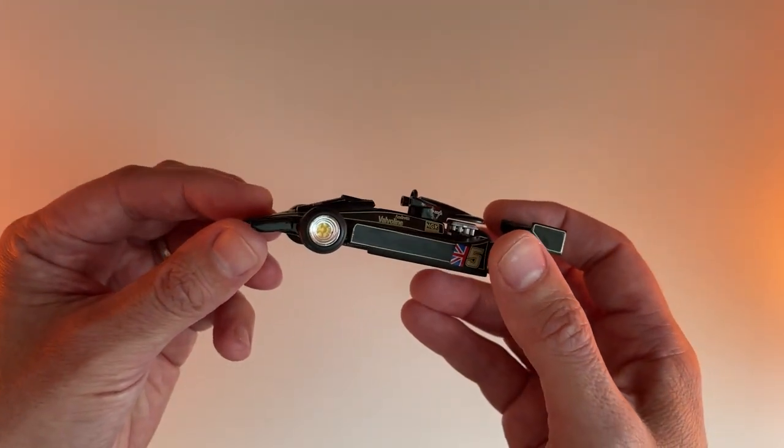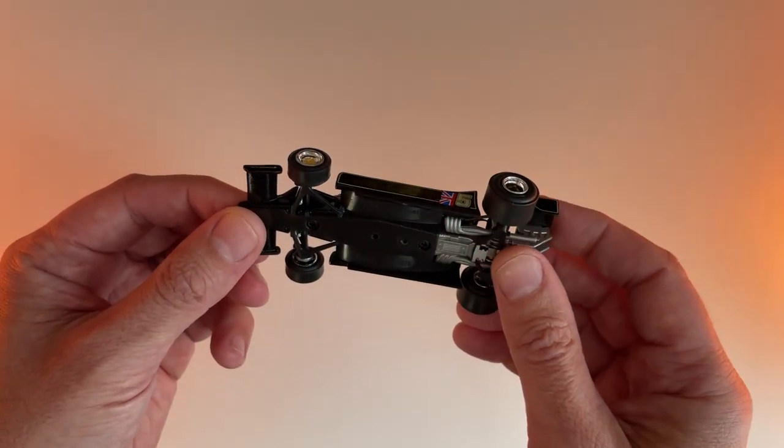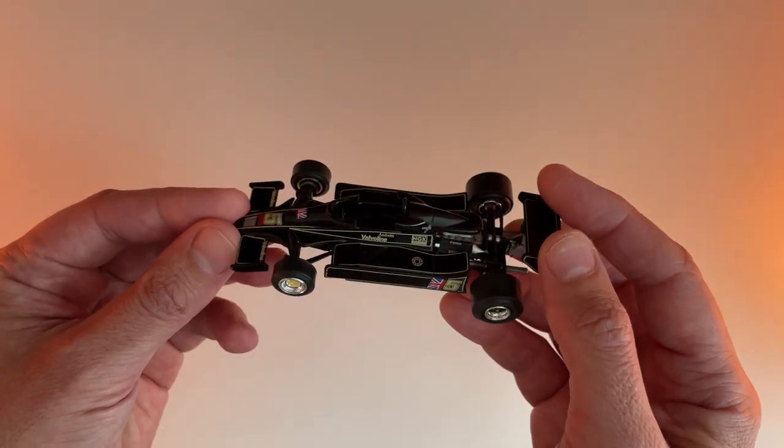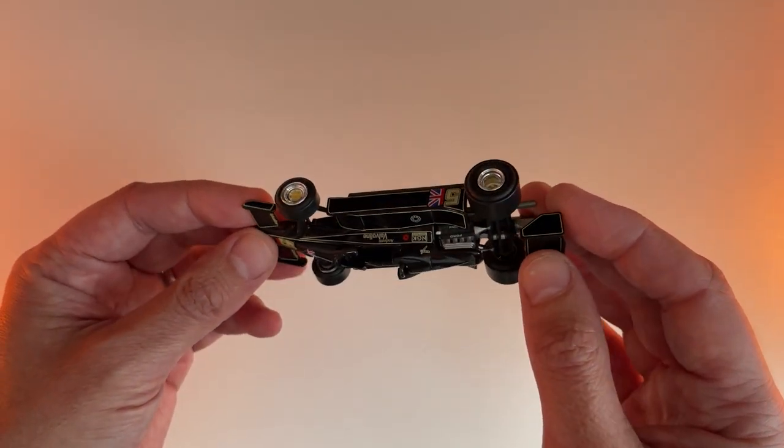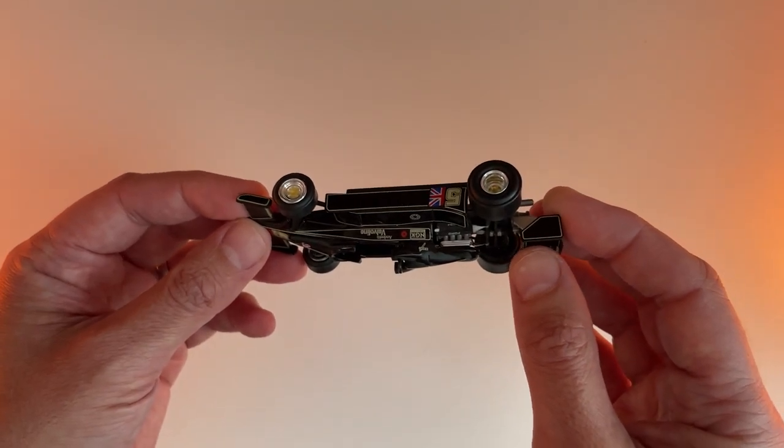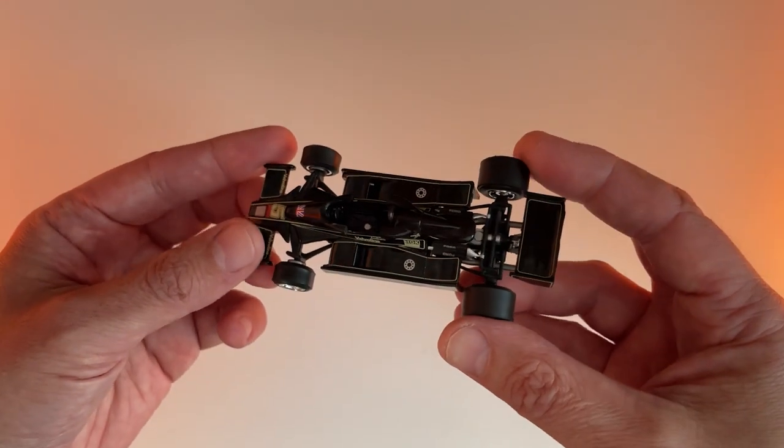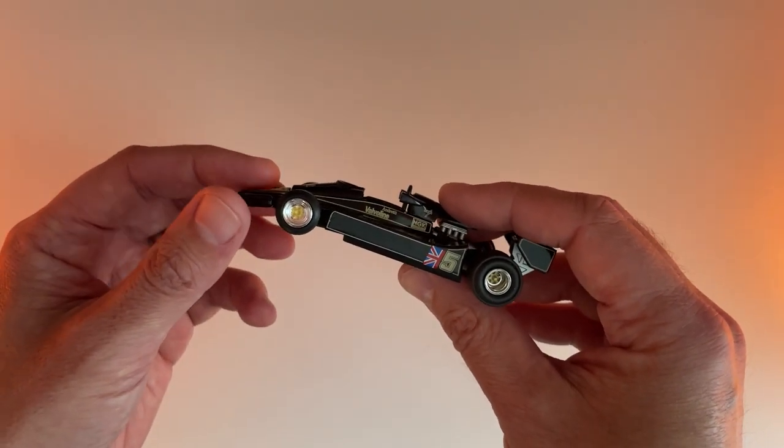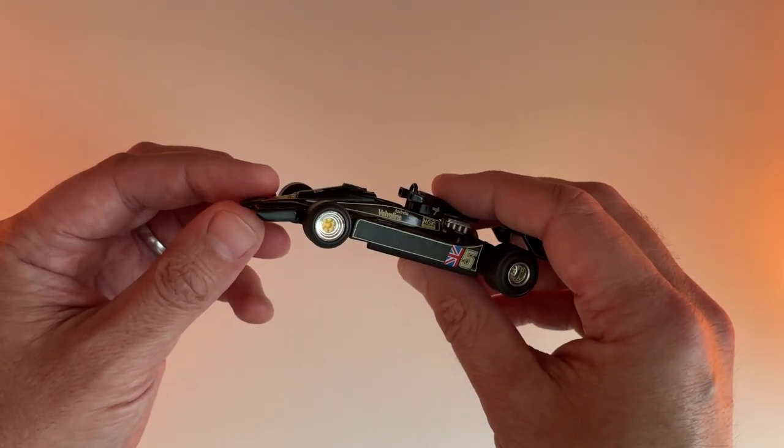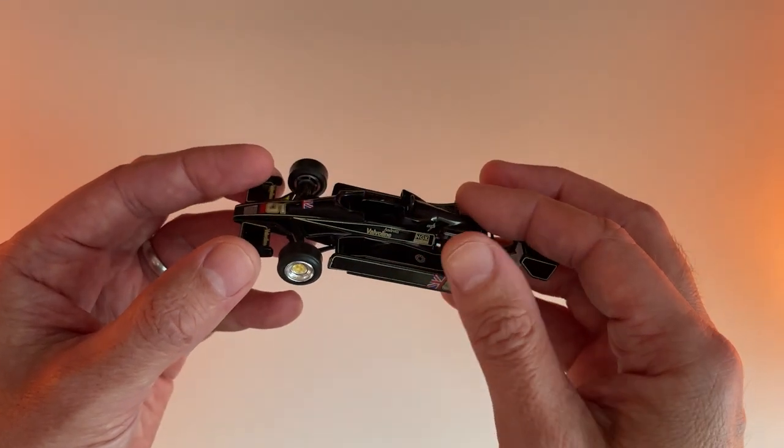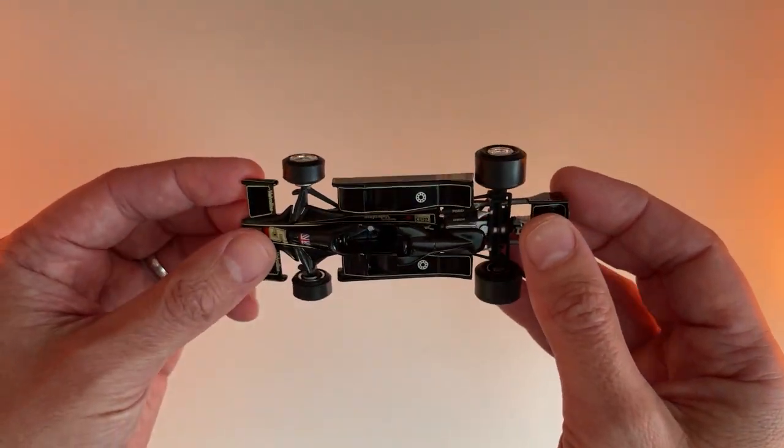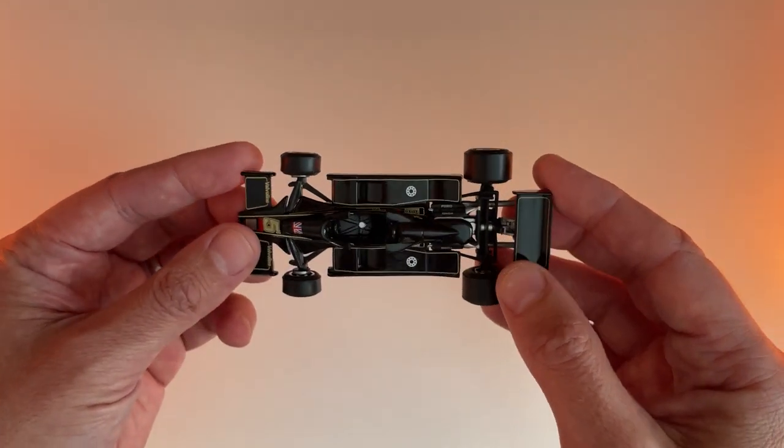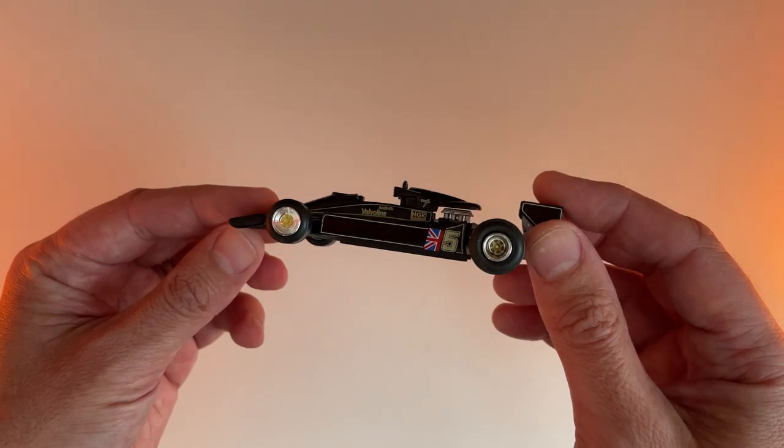The team owner, Colin Chapman, had been studying de Havilland Mosquito bombers from World War II, studying the wings and how they were designed to create uplift. And he thought, if I turn that upside down, it'll do the opposite - push the car onto the track, creating suction.